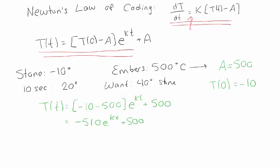So what I want is I want to know when the temperature is 40. So I should set this equation equal to 40 and solve for T. But the problem is I don't know k yet. In order to find k, I can make use of this fact, that after 10 seconds my stone was 20 degrees. So that means T(10) is 20. But I know that T(10) from this green equation is minus 510 e to the k times 10 plus 500. So now I can solve this for e to the k.